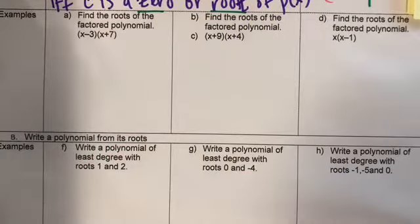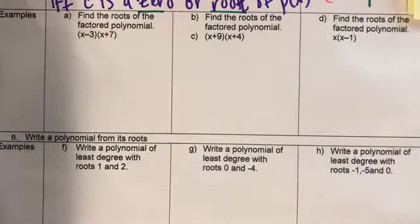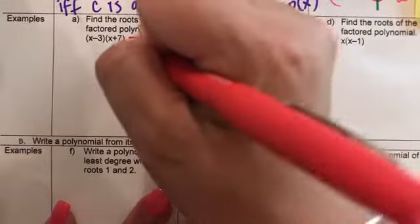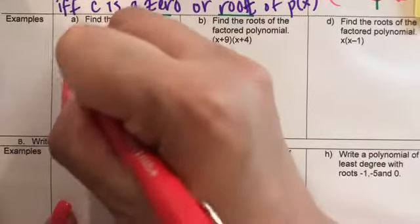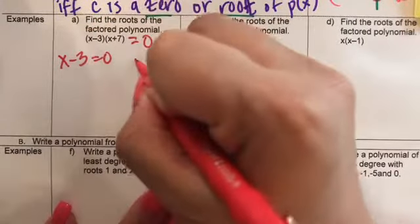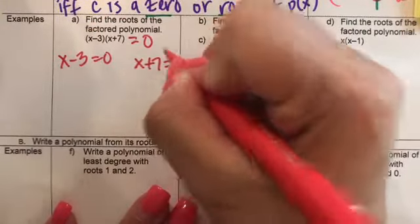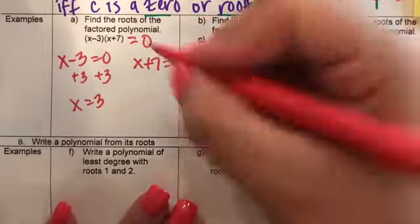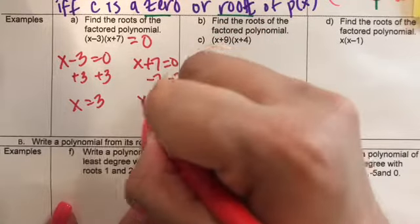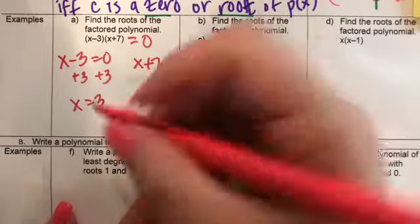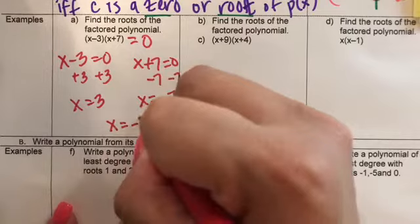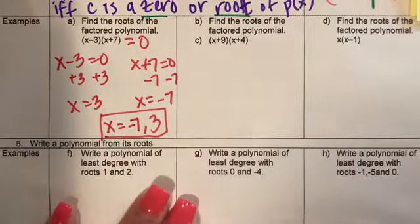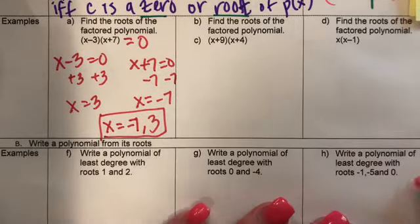Let's look at some examples. Find the roots of the factored polynomial — remember, this is already factored. Set each factor equal to zero: X minus three equals zero gives X equals three, and X plus seven equals zero gives X equals negative seven. So the roots are negative seven and three.